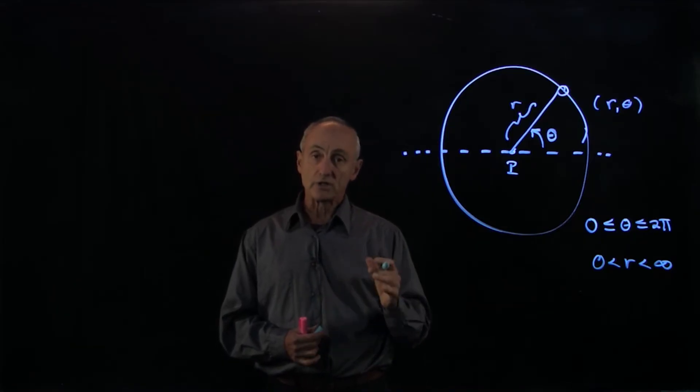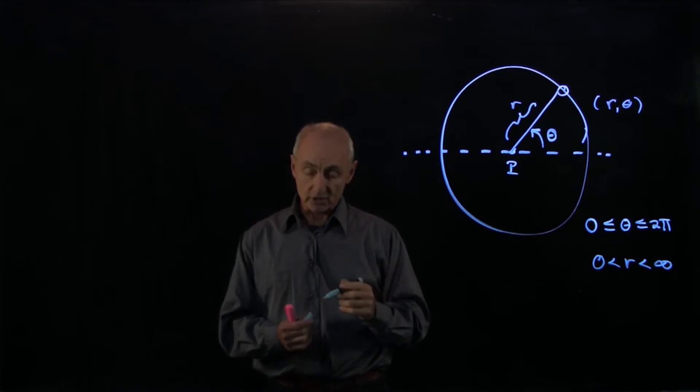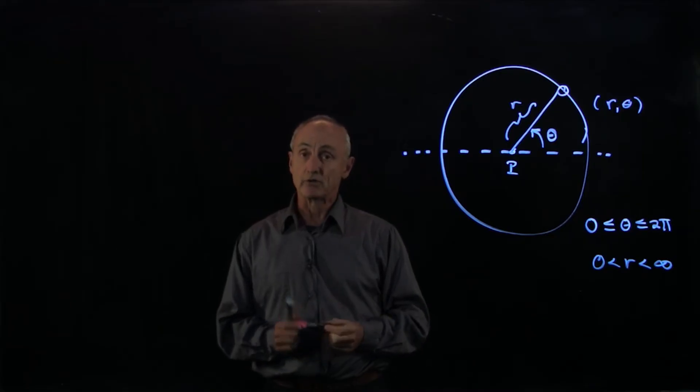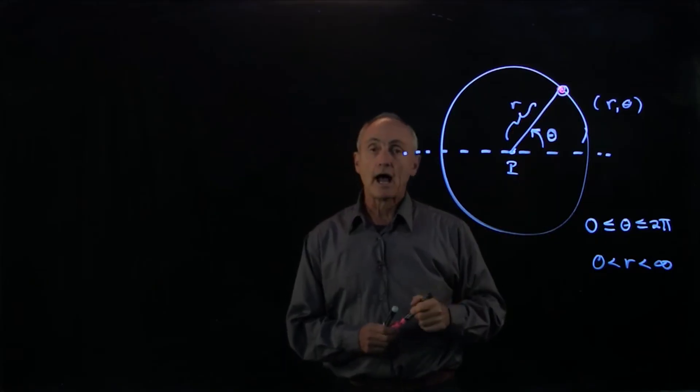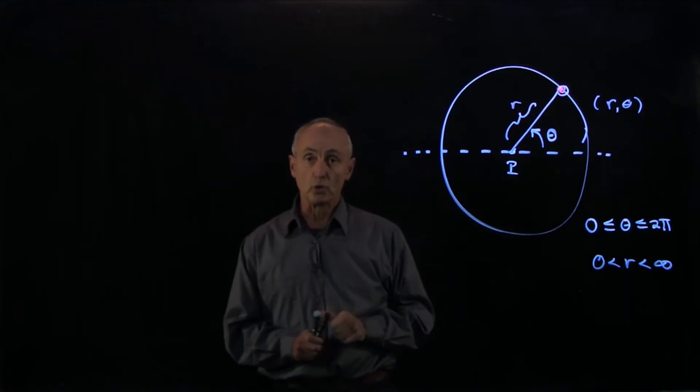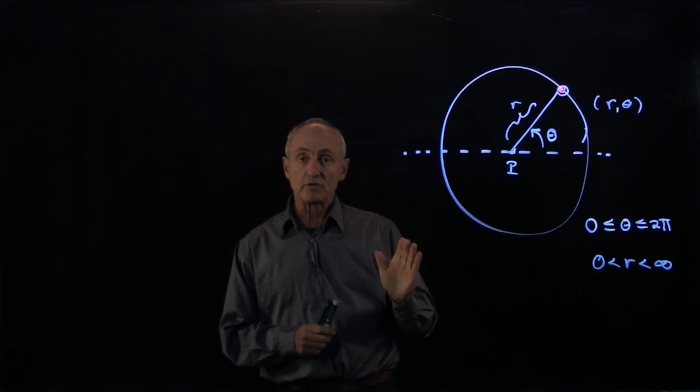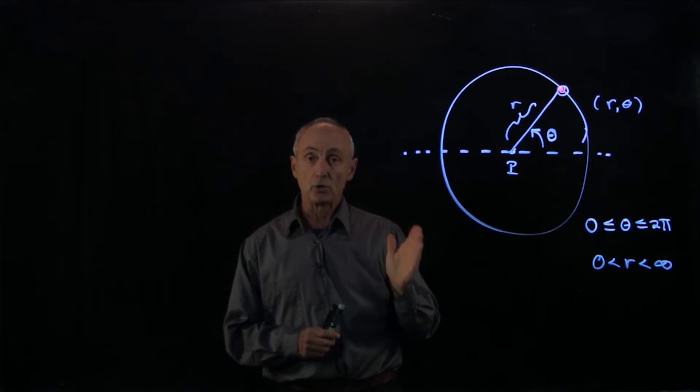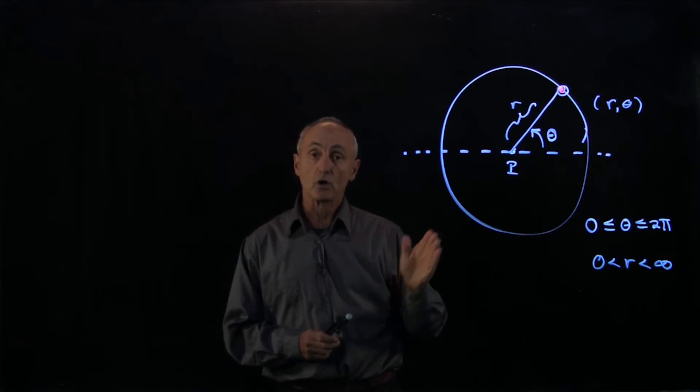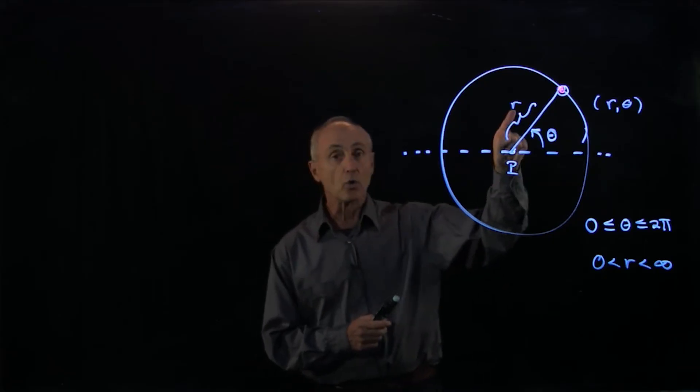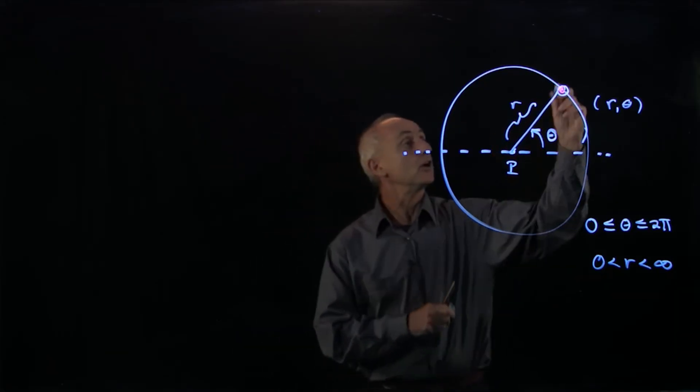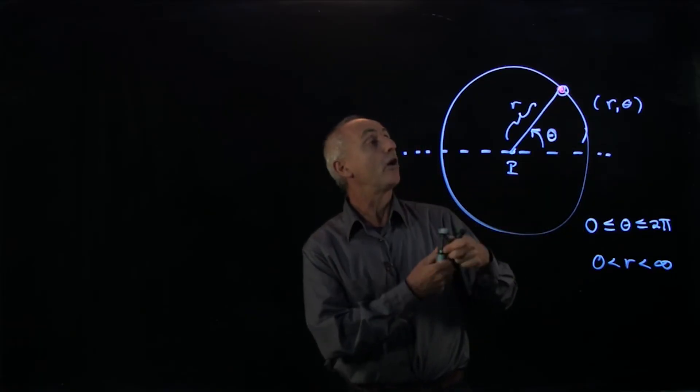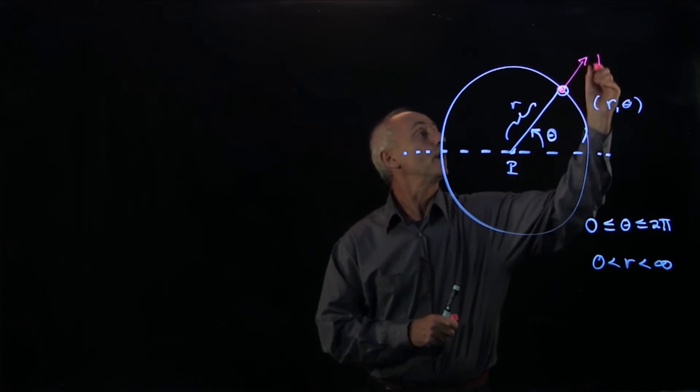When you have a coordinate system, at every point in space there has to be unit vectors. How do we choose unit vectors for polar coordinates? We always choose the unit vectors to point in the increasing direction of the coordinate. Take the r coordinate—that increases radially outward. So our unit vector r hat points radially outward.